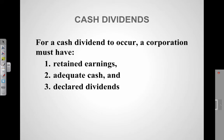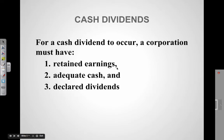There are three things that must occur in order for a corporation to have dividends. They must have sufficient retained earnings. They must have adequate cash. And the board of directors must actually declare a dividend. A board of directors cannot declare a dividend if there's not enough cash in the company. Remember what retained earnings are: all of the net income over time minus any dividends that they've already given out.